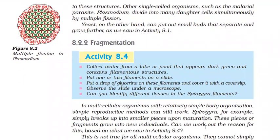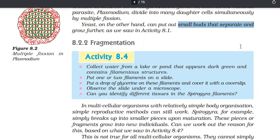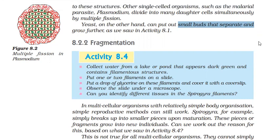Budding is seen in yeast. In yeast, a small bud appears on the parent cell and is not detached immediately. In the beginning a chain of new buds forms, and then they are detached to form many daughter cells, each growing into a new individual. The nucleus of the parent cell divides, and one nucleus moves into the outgrowth while one remains in the parent cell. If conditions are highly favorable, a chain of buds is formed.